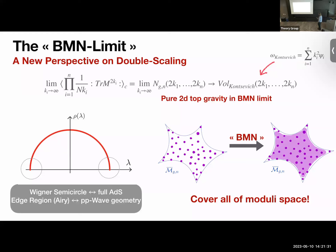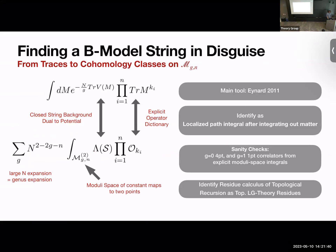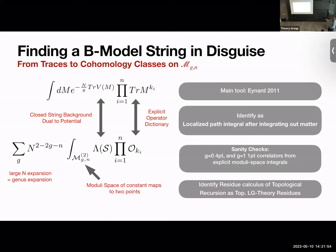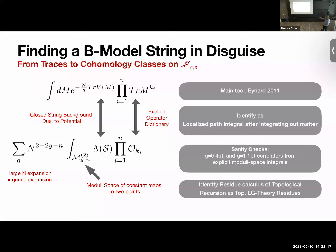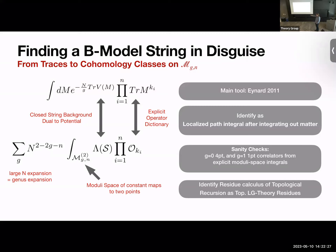A few words on the B-model. Using topological recursion — mostly due to work by Eynard in 2011 — we establish the equality here: we translate the integral over matrices into an integral over a moduli space, specifically what's called a colored moduli space, which is really the moduli space of constant maps to two points. The potential V(M) determines part of the integrand on moduli space — something called lambda — which encodes the geometry the string sees and arises from integrating out matter on the string side.